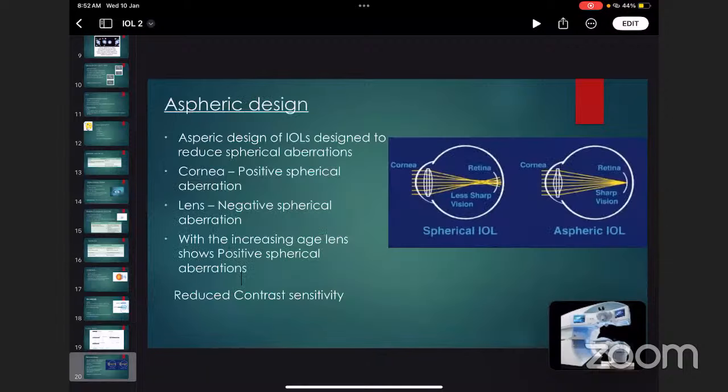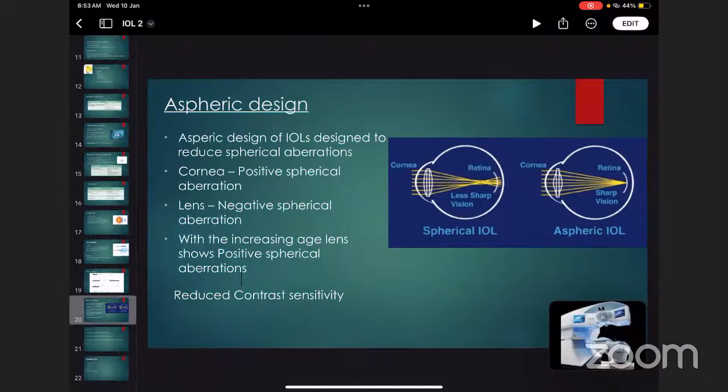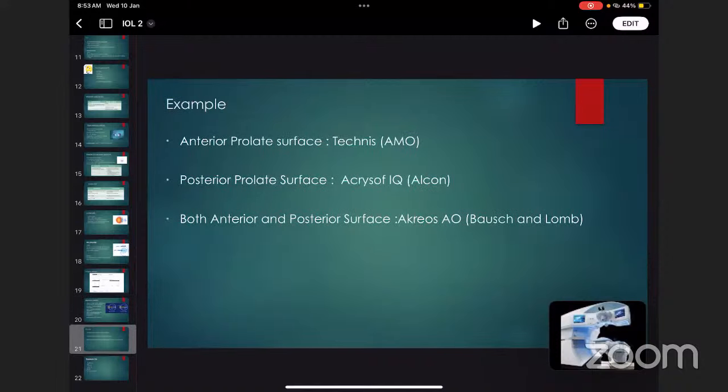Aspheric design of intraocular lenses designed to reduce spherical aberrations. Naturally, cornea has positive spherical aberrations and lens has negative spherical aberrations. In young age, it's balanced. But as age advances, there's an increase in lens with increase in refractive power, which results in positive spherical aberrations, reducing contrast sensitivity. To eliminate spherical aberrations, they invented the aspherical design. Aspherical designs are two types: negative aspherical design and zero aspherical.